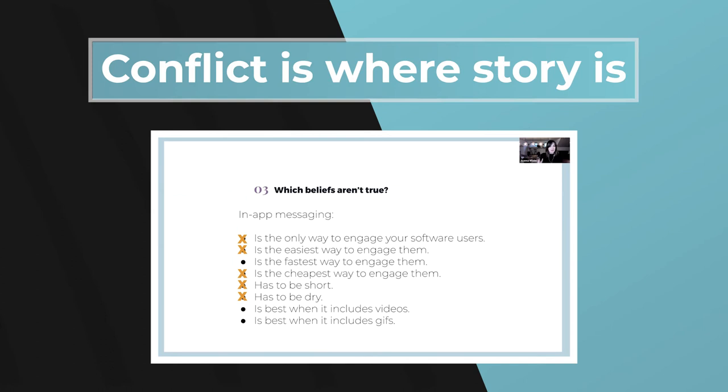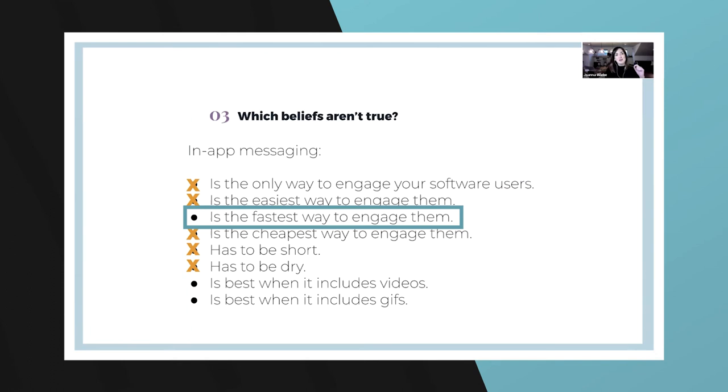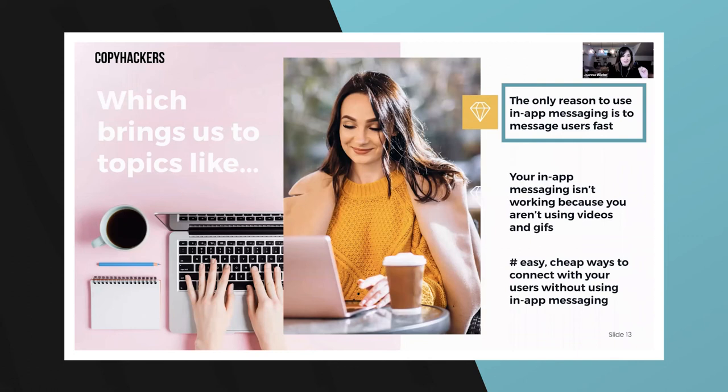Now take those beliefs that aren't true and turn them into your blog topics. For example, you could write a blog post called 'The Only Reason for SaaS Marketers to Use In-App Messaging Is to Message Users Quickly — There Is No Other Reason.' You could make a really interesting argument for that.